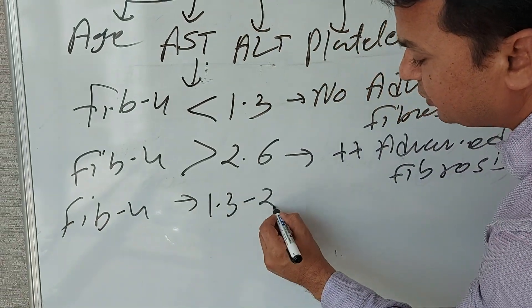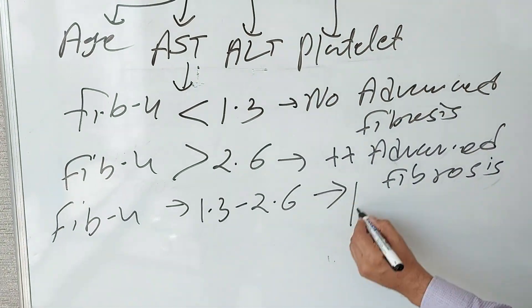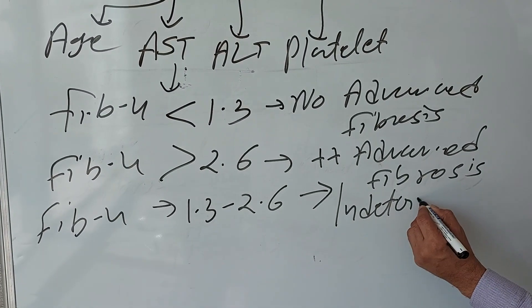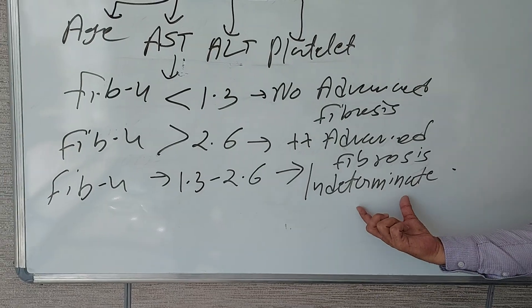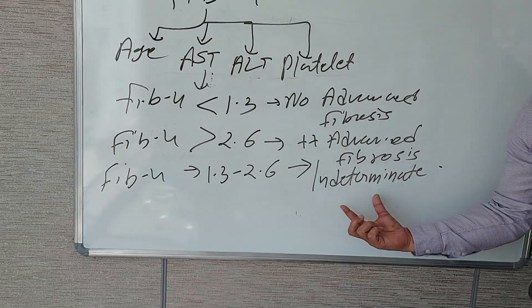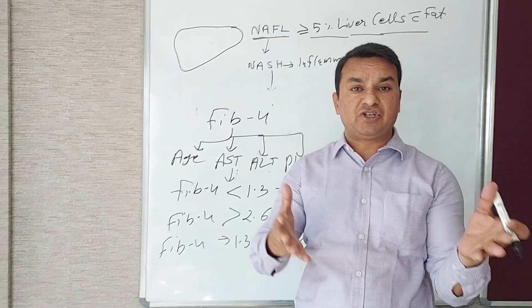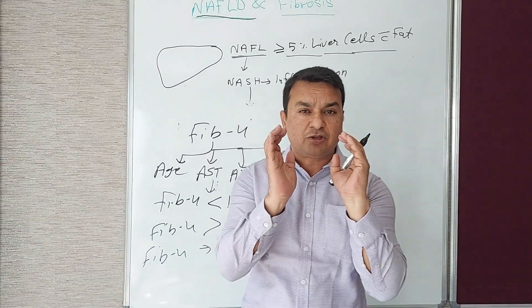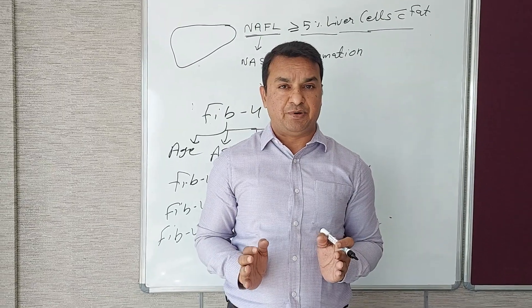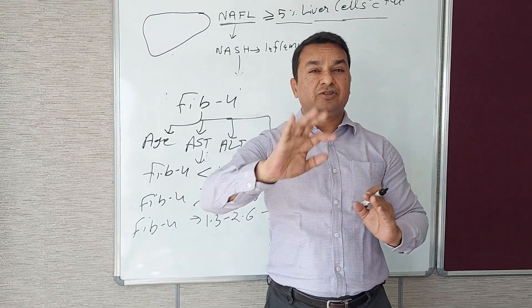1.3 to 2.6, we call it indeterminate value. In this indeterminate group of patients, wherein you are not sure whether the patient has no fibrosis or advanced fibrosis, for that indeterminate class of patients, you will recommend the